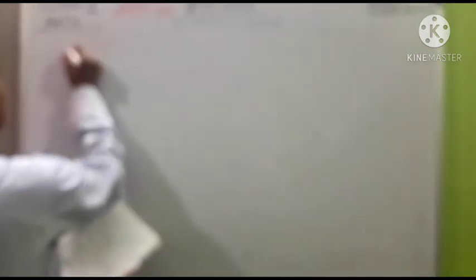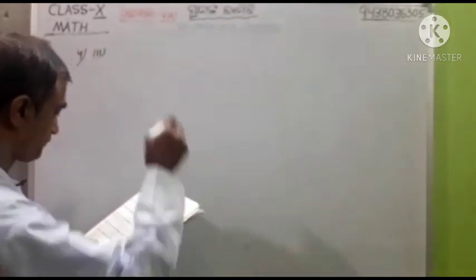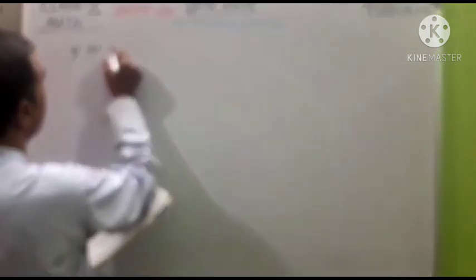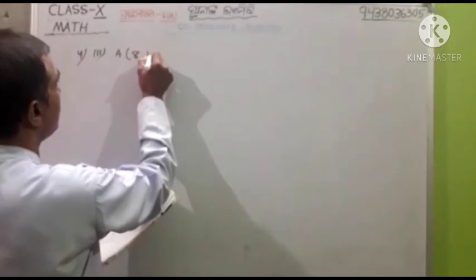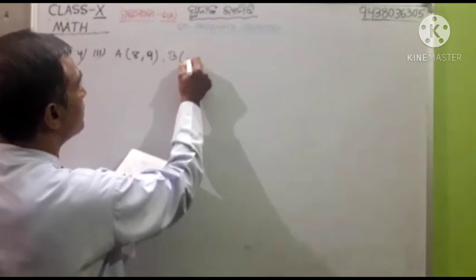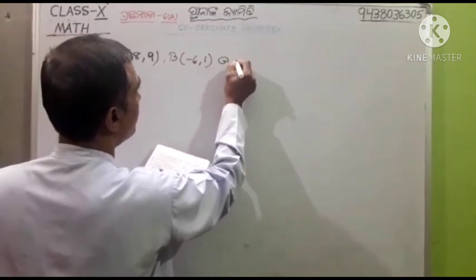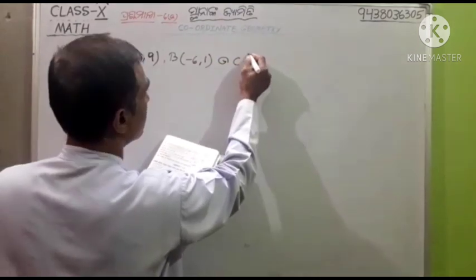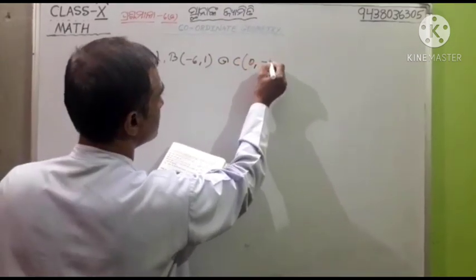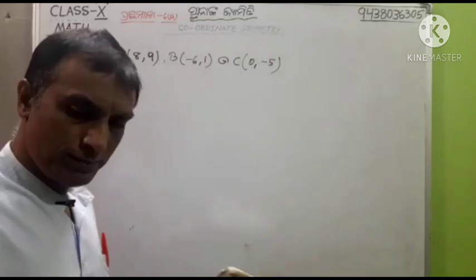Number 4. I have made a third beta. A: 89, B: minus 61, C: 0, minus 5.